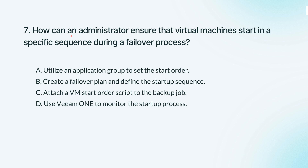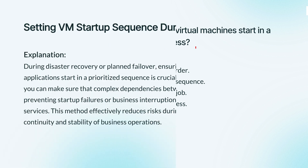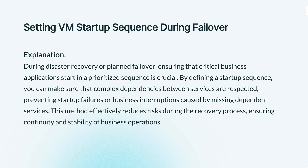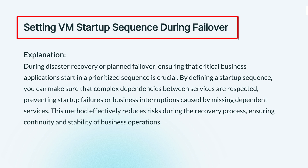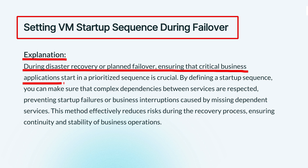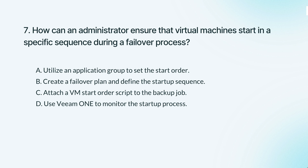Question 7. How can an administrator ensure that virtual machines start in a specific sequence during a failover process? The knowledge points of this question are setting VM startup sequence during failover. During a failover, it's important to start your virtual machines in the right order. By setting a startup sequence, you make sure everything comes online in the correct order, avoiding issues with services that depend on each other. The correct answer is: by creating a failover plan, you can define the startup sequence of virtual machines, ensuring critical services come online in the correct order to avoid dependency issues.